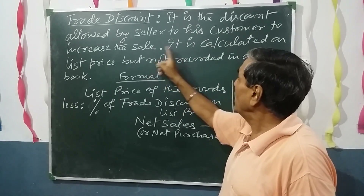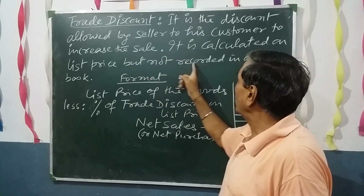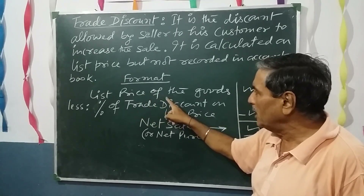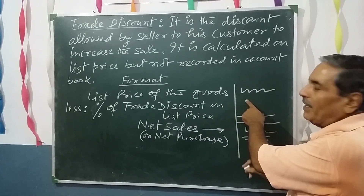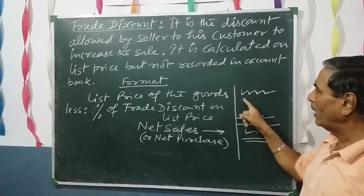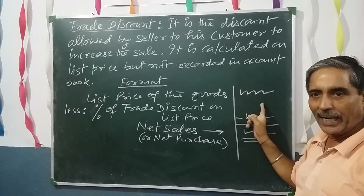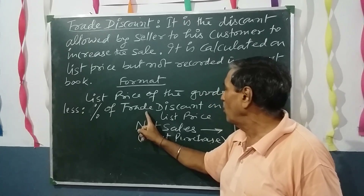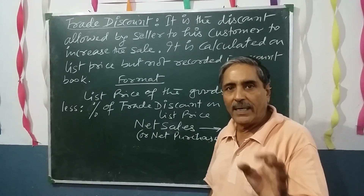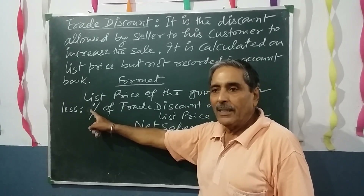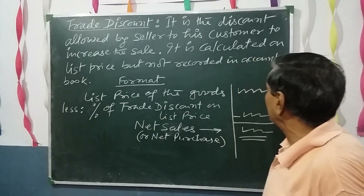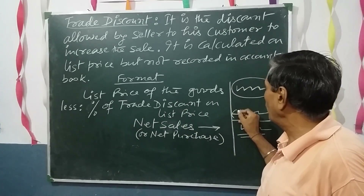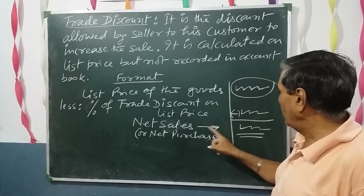Trade discount is calculated on the list price but is not recorded in the account books. The format is: first, note down the list price of the goods — whatever amount is given, write that. Then, calculate the percentage of trade discount on the list price. Whatever percentage is given in the question, suppose 10%, calculate that trade discount amount and subtract it from the total list price.